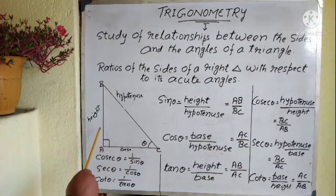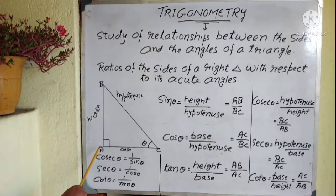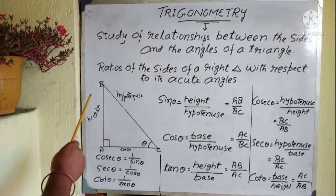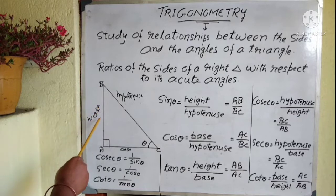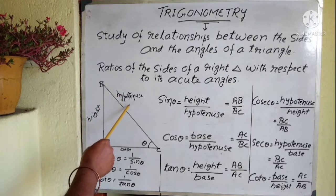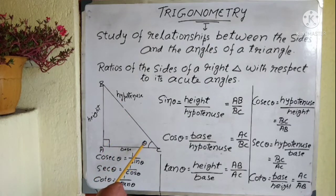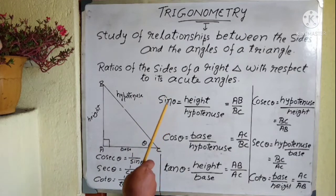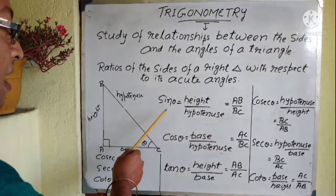This is a right angle triangle ABC. This is your 90 degree angle. In a right angle triangle, one angle is 90 degrees, so the other two angles are acute angles — less than 90 degrees. We will consider this angle as theta. The opposite side to theta is your height or perpendicular, this is your hypotenuse, and this is your base.